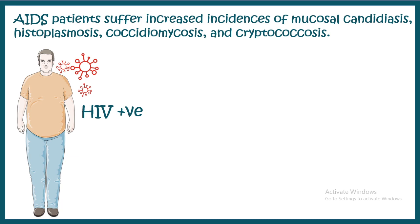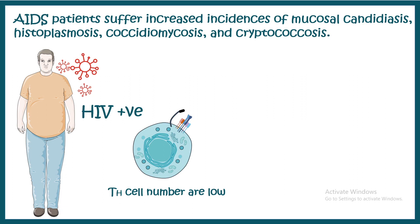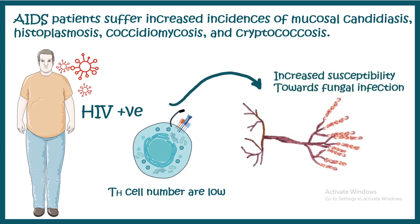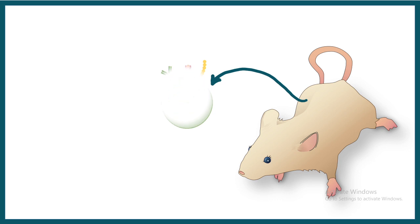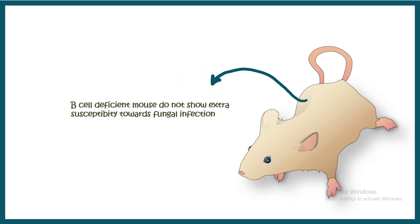It is known that AIDS patients suffer an increased incidence of mucosal candidiasis and many other fungal infections. This tells us that when HIV reduces Th helper cell numbers, susceptibility to fungal infection increases. This indicates that among the adaptive immune components, T cell response — not B cell response — is crucial for fungal infection elimination.